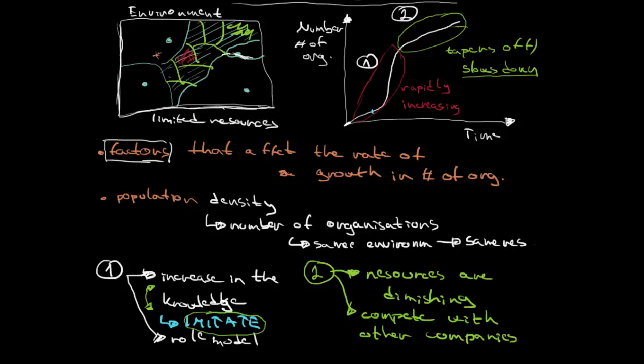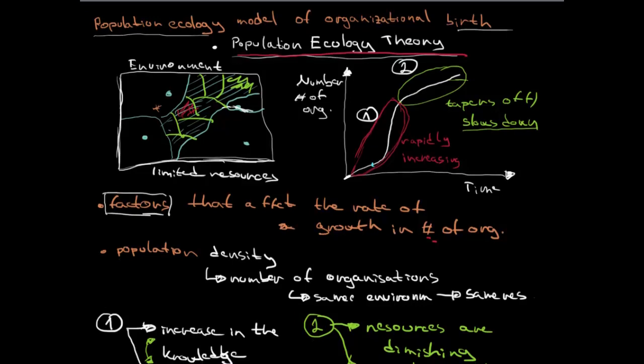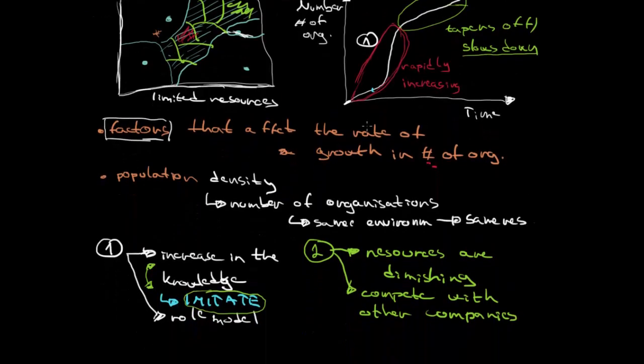So we have got population ecology theory that tries to explain the factors that affect the rate of growth in number of organizations. Always remember this number. And that there are two phases in the growing of the number. And the factors that are behind are always two in both of the phases. One is increasing the knowledge and the role model, and that there is some imitating in the market. And then when this rate slows down it is because the resources are diminishing and that we have to compete with other companies for them. So hopefully it was helpful.